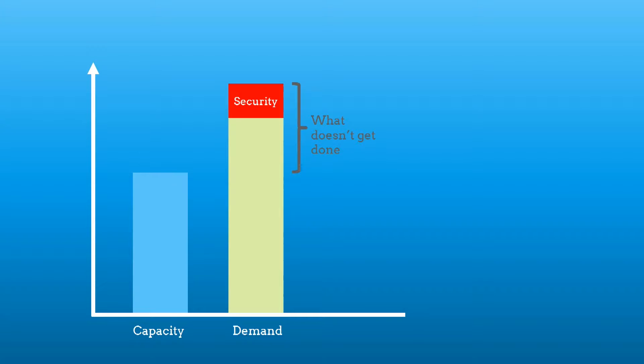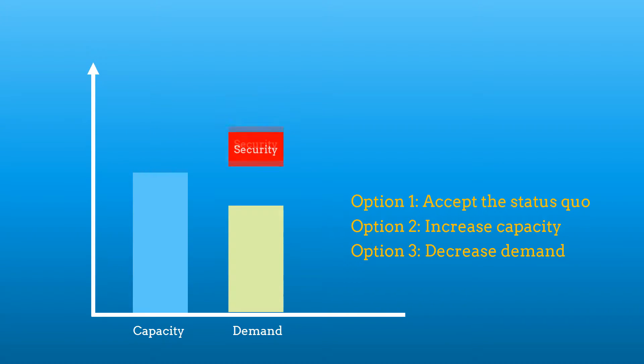There are essentially four responses that any organization can have to this situation. The first is to concede defeat, the second is to increase capacity, the third to reduce demand, and the fourth is to reprioritize. But none of these options are acceptable to most managers—they all seem suboptimal for one reason or another.